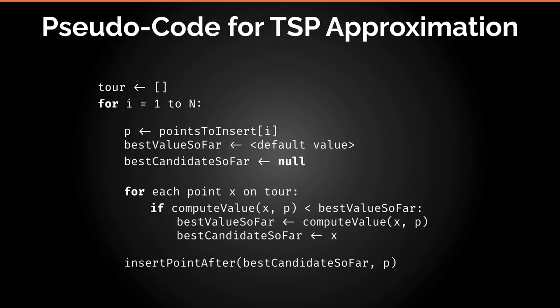Here's what your TSP approximation should look like in pseudocode. For every point, find the point you have to insert. Create flag variables — best value so far and best candidate, initialized to null. Pick the default value carefully. Then go through all the points already inserted in your tour and measure whether each is the best candidate for this particular insertion. As you update the best candidate, at the end you know where to make your insertion. This shows why you have to look at all of the points that are already in the tour when inserting a new one.